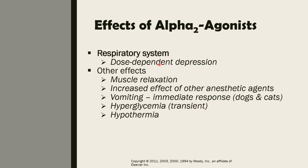For the respiratory system, there is dose-dependent depression, which is also true with other anesthetic drugs. For other effects, alpha-2 agonists also have a muscle relaxation property and will increase the effect of other anesthetic agents. This relates to multimodal drug therapy or balanced anesthesia — meaning we decrease the side effects and adverse reactions of these drugs when we give them together in smaller doses.